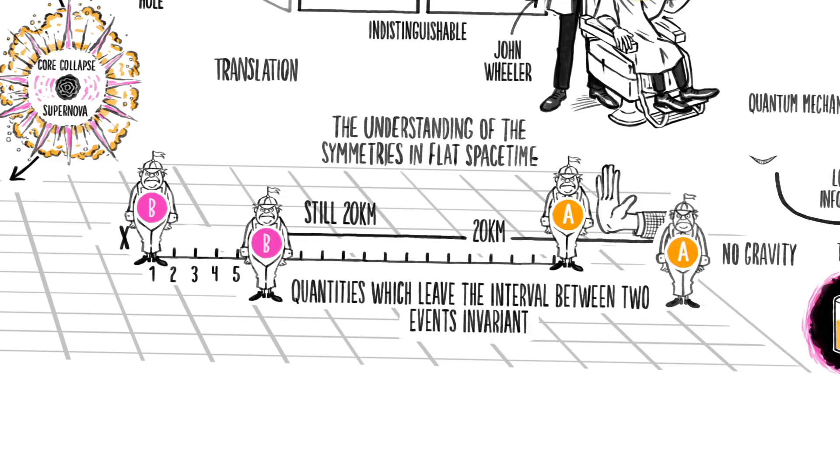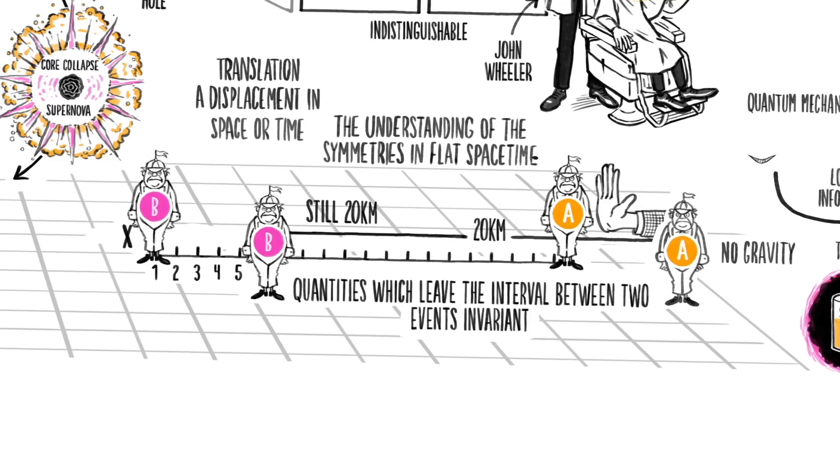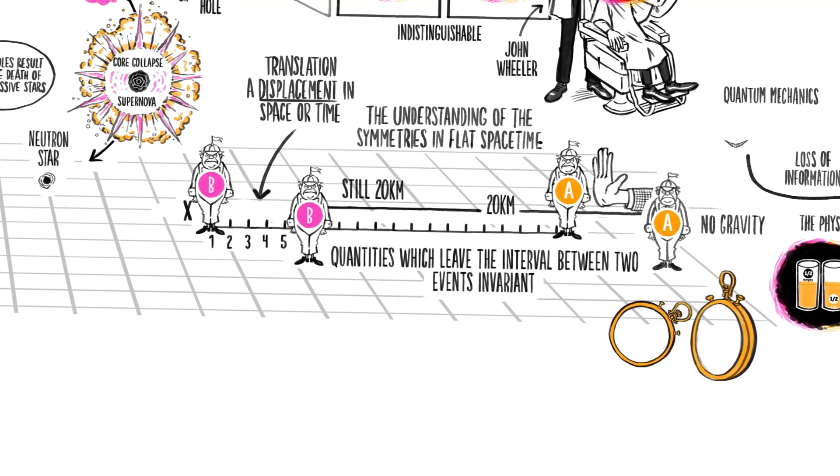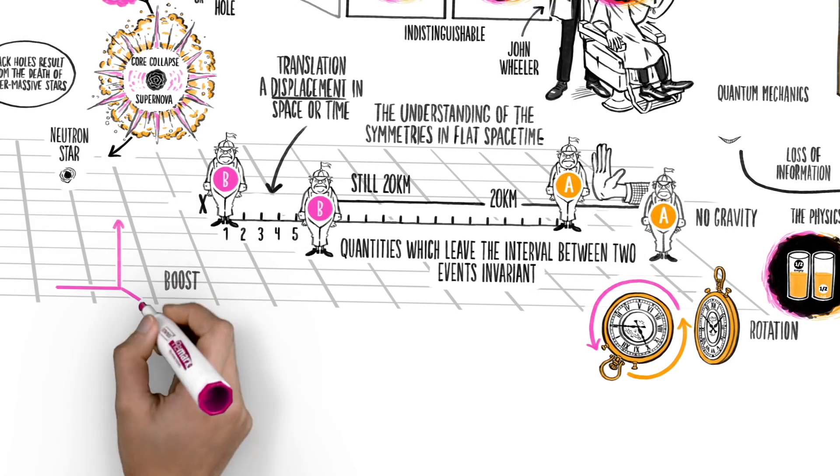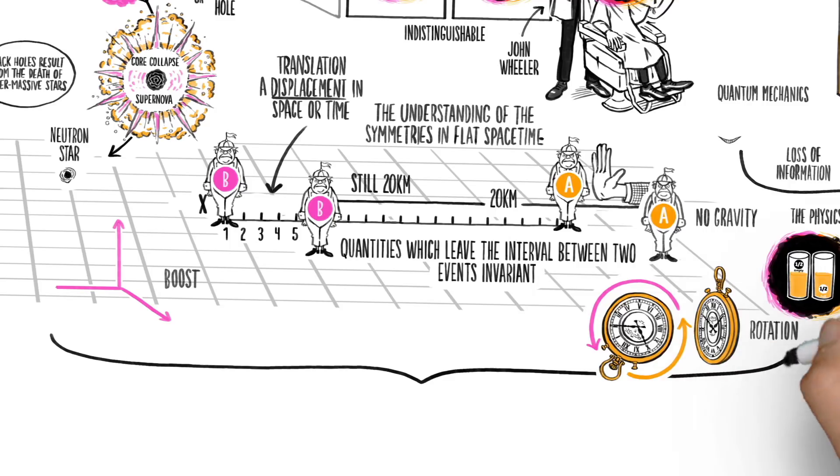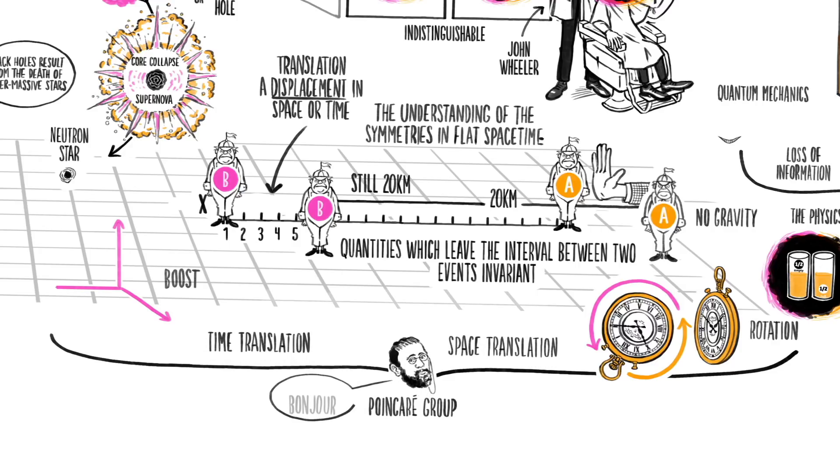This is a type of translation, a displacement in space or time. Similarly, we may perform a rotation or a boost, a transformation linking two uniformly moving objects. This set of actions are called symmetries, and together make up what is known as the Poincaré group, the symmetry group of flat spacetime, of special relativity.